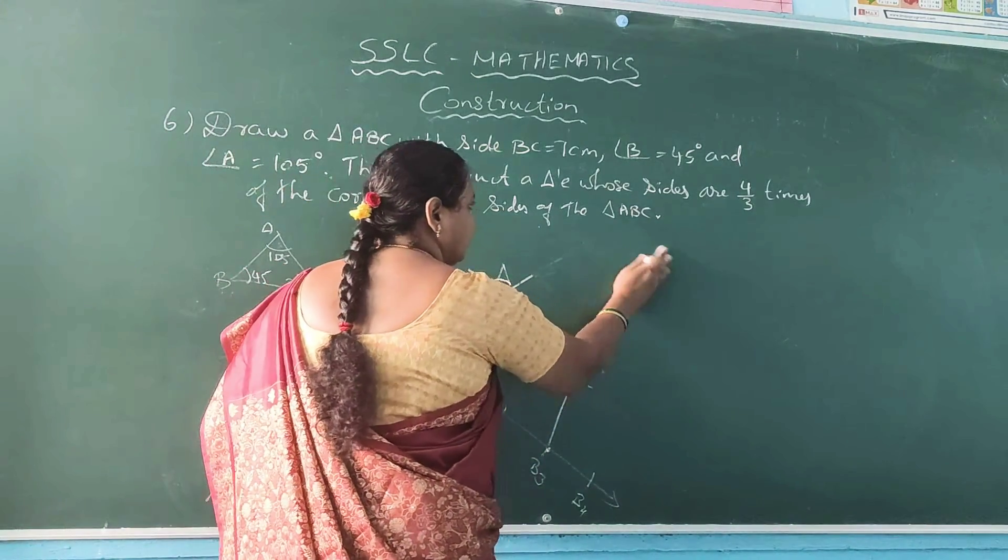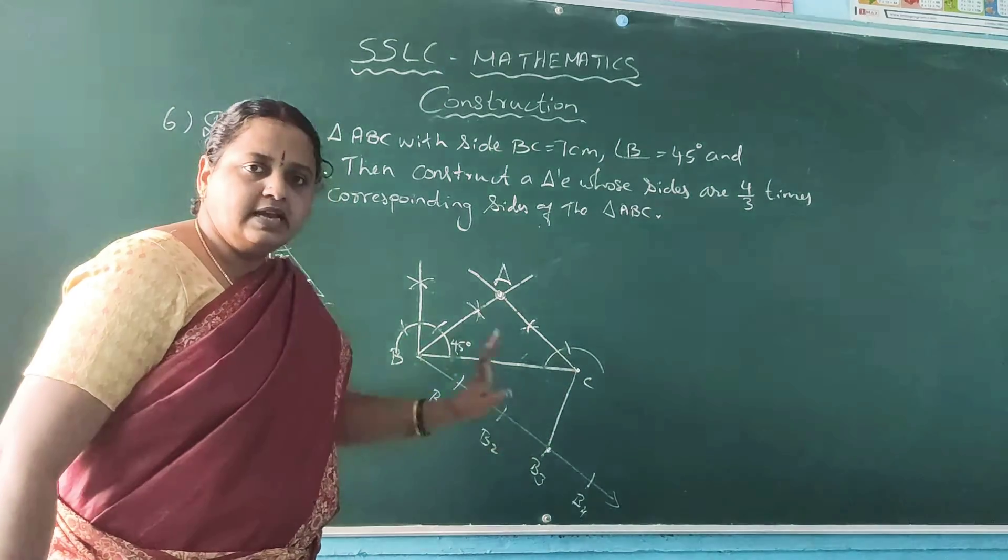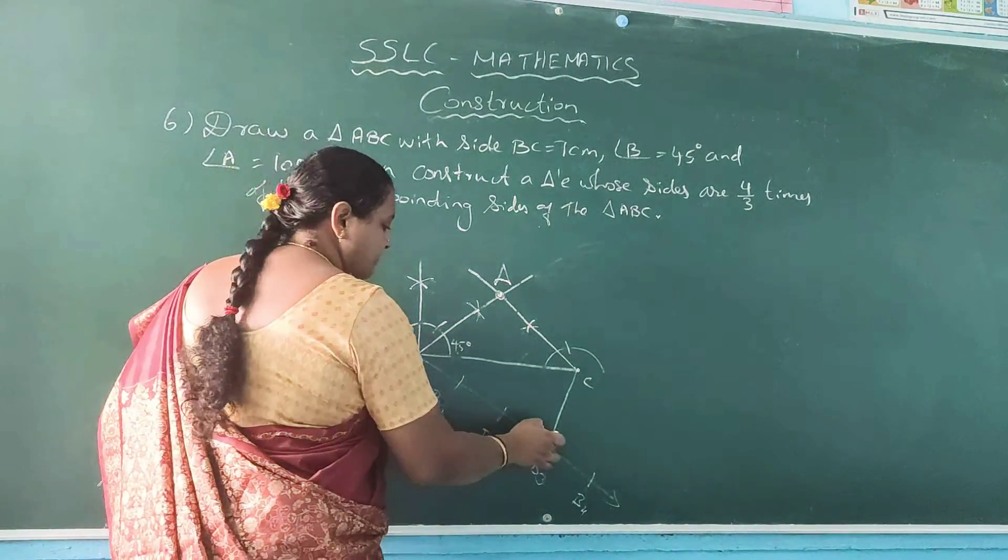Now but here this is 4 by 3, so with the denominator 3 I have joined C and B3. Now follow the step.